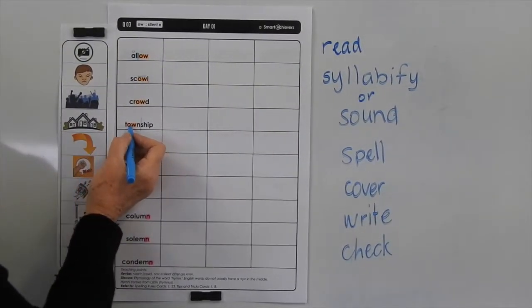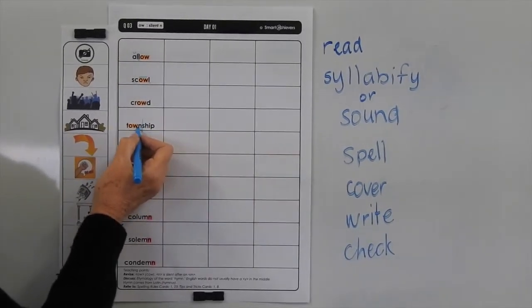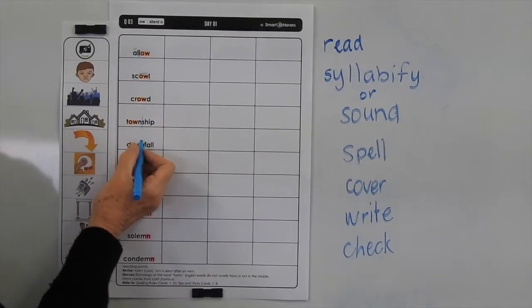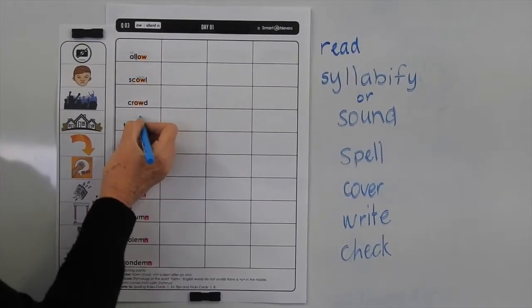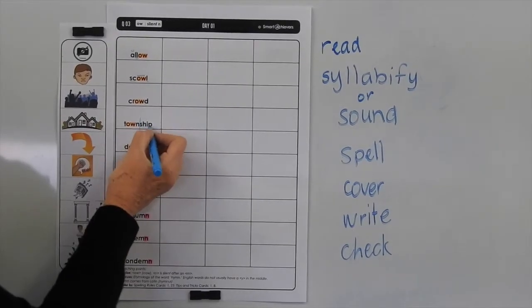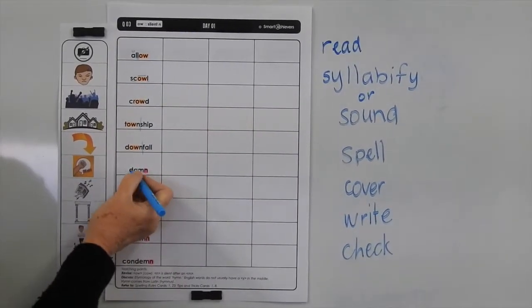Township is like two little words joined together to make one word. Same with downfall — so we'd split them into their two words when we're syllabifying them.